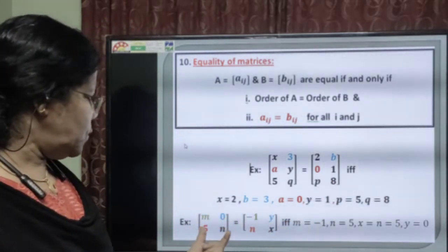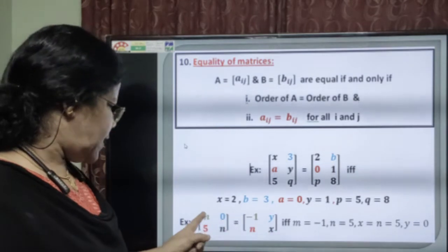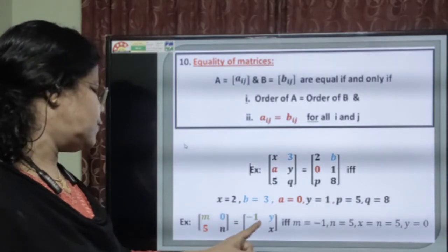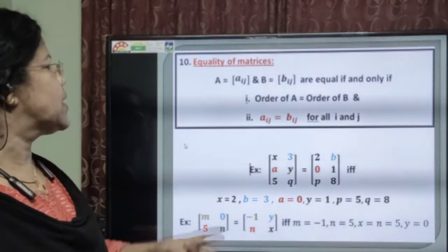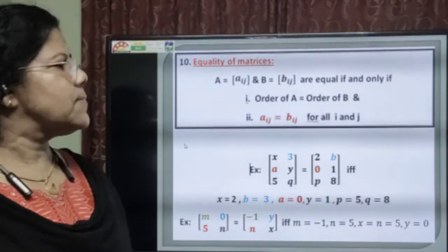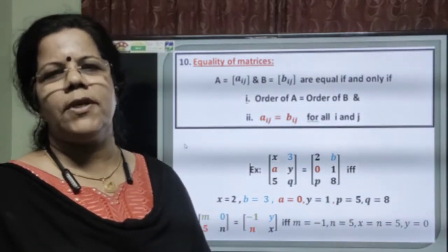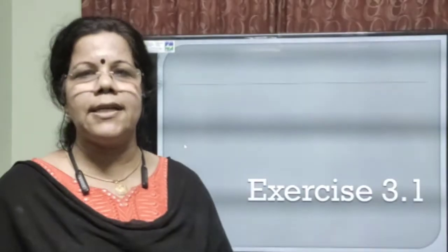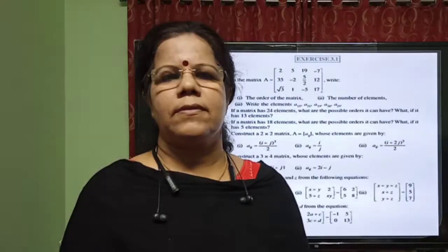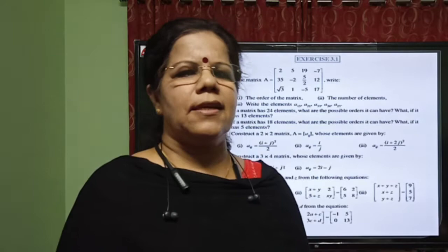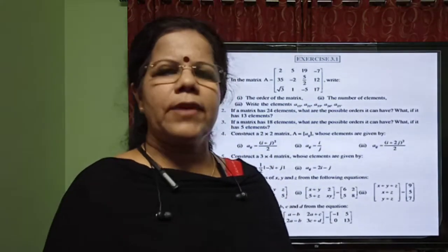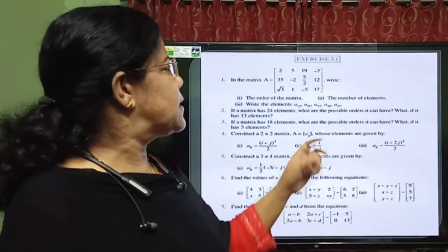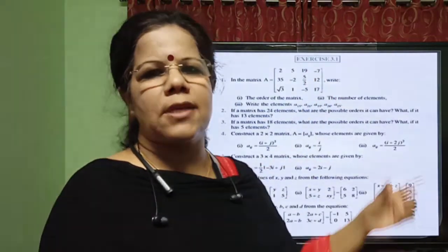One more example is given. Two matrices are equal, so we equate the corresponding elements: m equals negative 1, y equals 0, n equals 5, and x equals n. This is the very important concept of equality of matrices. Now let us solve some important problems of exercise 3.1, so that all the concepts discussed — definition, order of a matrix, different types of matrices, and equality of matrices — will be very clear.